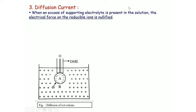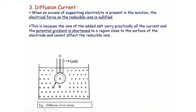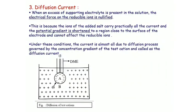The diagram shows the diffusion of the test cation when an excess of supporting electrolyte is present. The supporting electrolyte nullifies the electrical force on the reducible ions and removes migration due to electrostatic force of attraction. The ions of the added salt carry practically all the current, and the potential gradient is shortened to a region close to the surface of the electrode and cannot affect the reducible ion. Therefore, the current flowing through the cell is only due to the concentration gradient, called diffusion current.